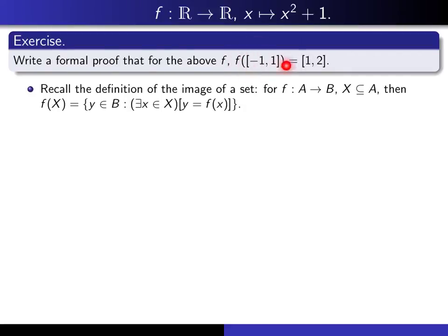In the first paragraph, we begin by taking an element of the image of [minus 1, 1]. That means it's a y value in R such that there exists an x between minus 1 and 1 with y equal to f of x. We then prove that y is necessarily between 1 and 2. Conversely, if we start with a y between 1 and 2, we have to produce an x in the interval such that y equals f of x. Why don't you pause the video and try to write the formal proof.